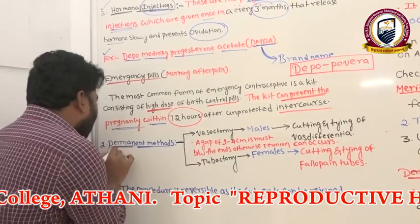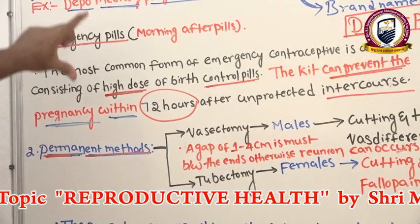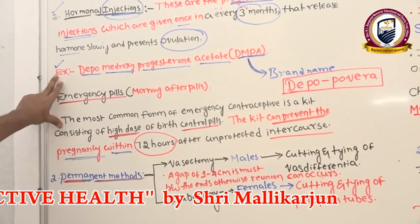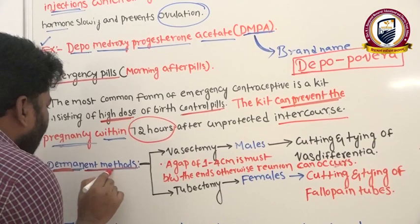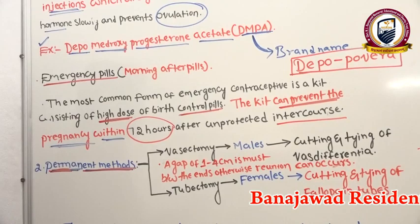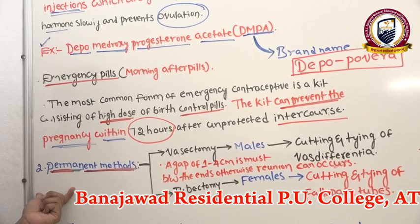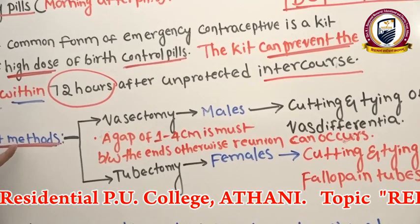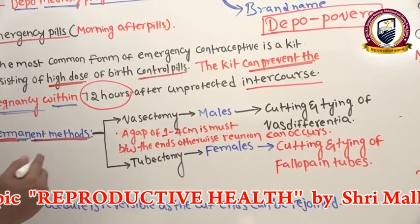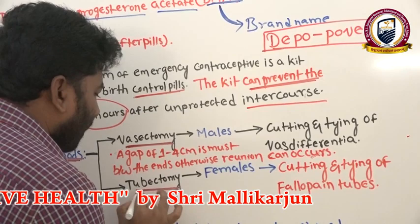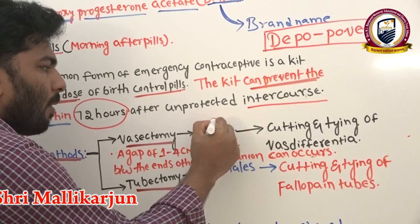Now we move to the last category — permanent contraceptive methods. All methods discussed so far are temporary. Permanent methods, as the name suggests, are irreversible once performed. We must think carefully before choosing this option. Under permanent methods there are two procedures: vasectomy and tubectomy.